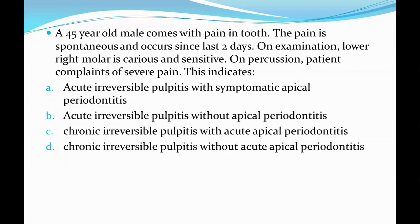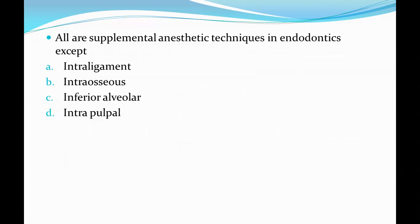The correct option is Option A, acute irreversible pulpitis with symptomatic apical periodontitis. It is symptomatic apical periodontitis because the patient has pain on percussion and spontaneous pain since the last two days.